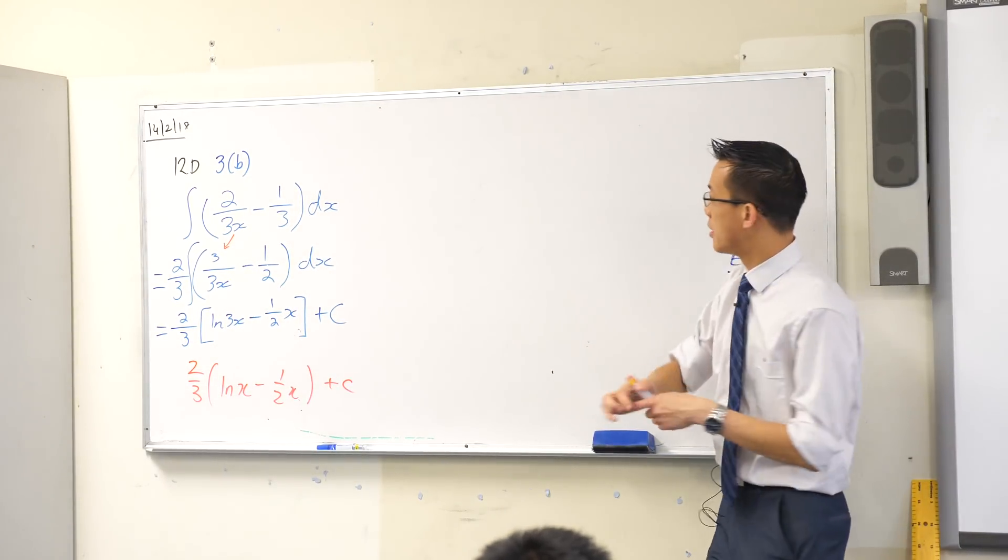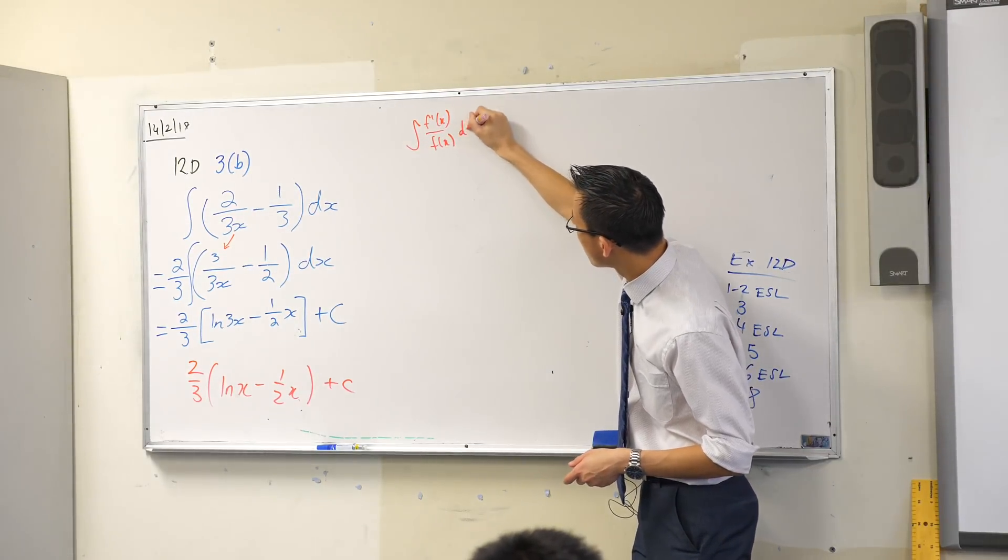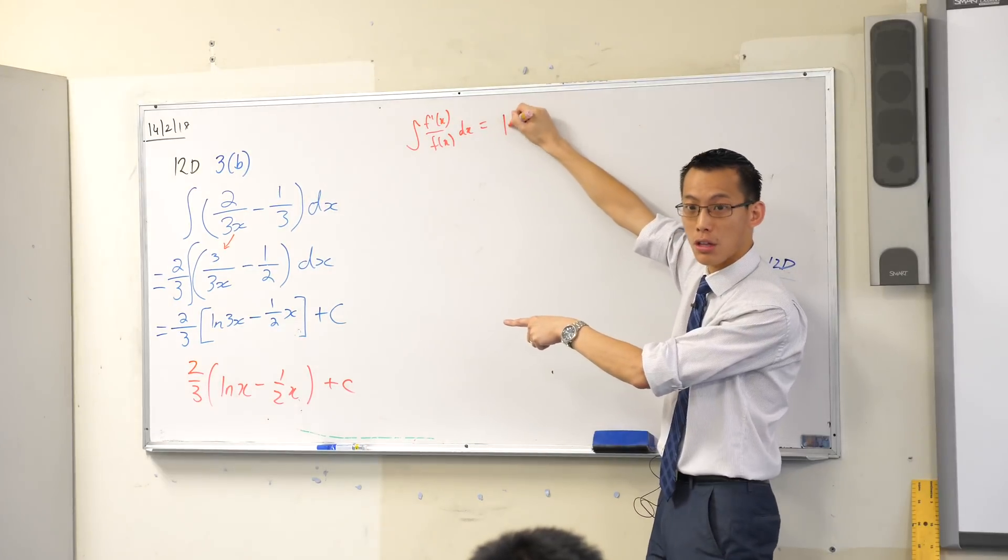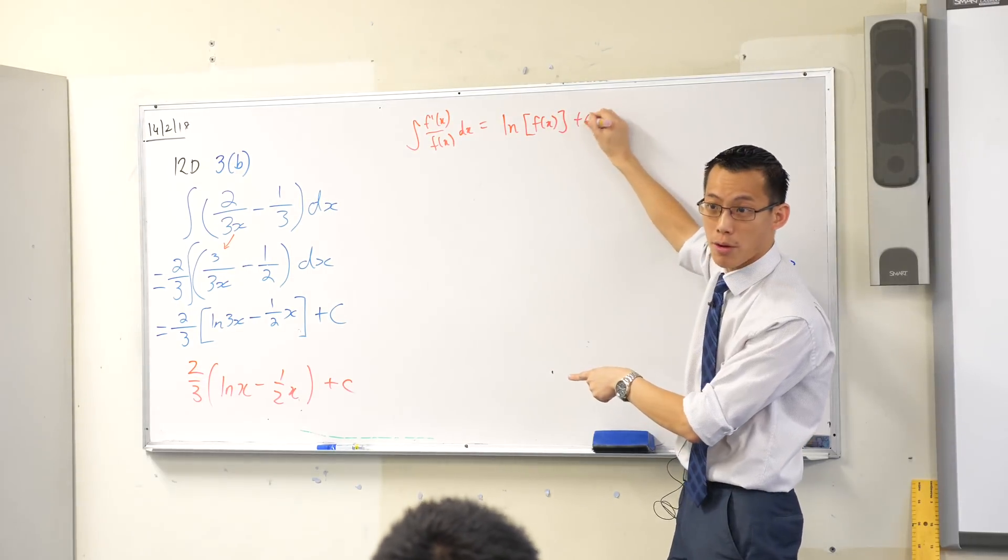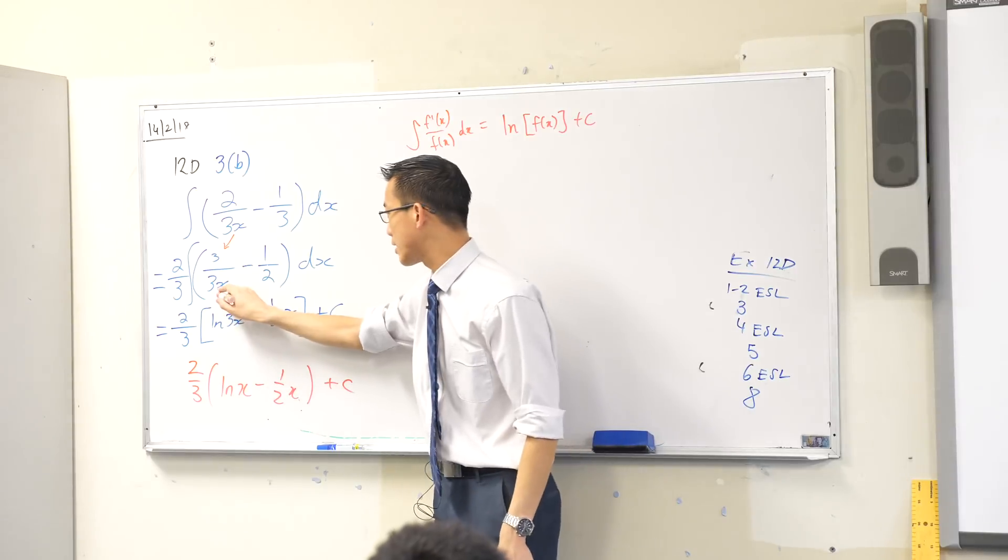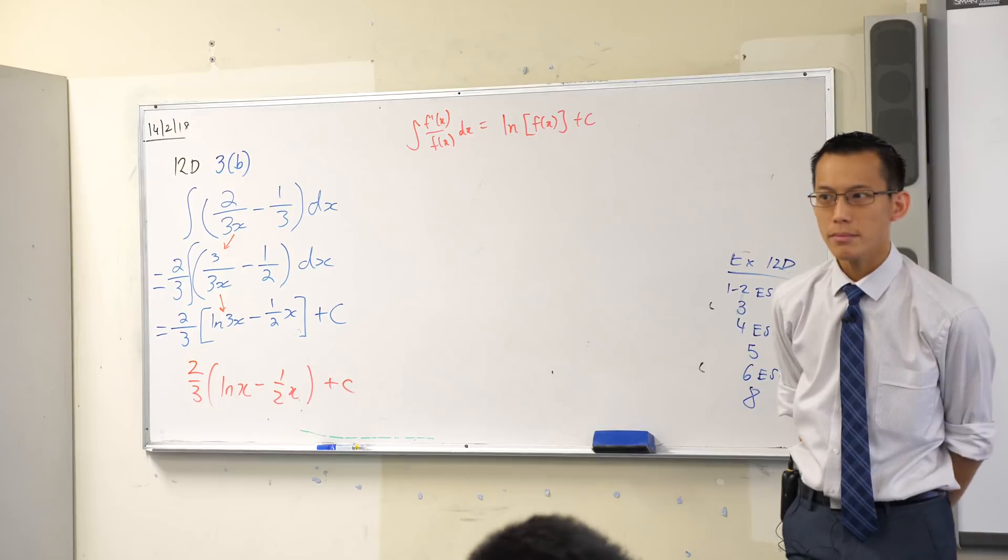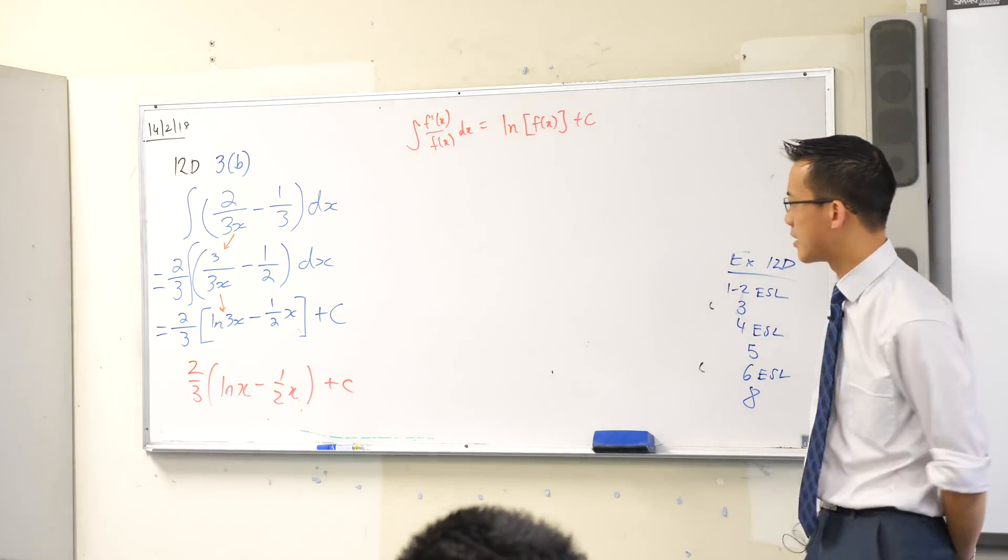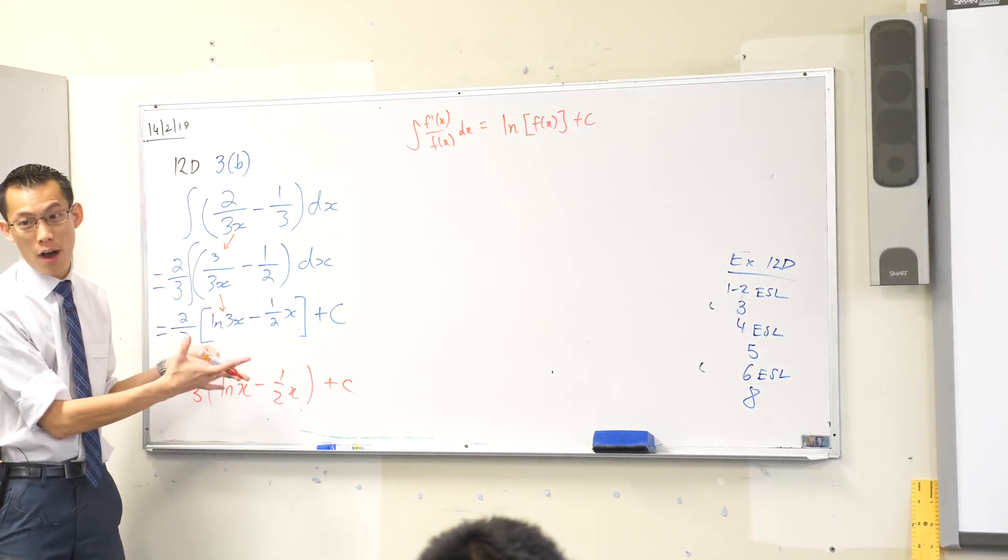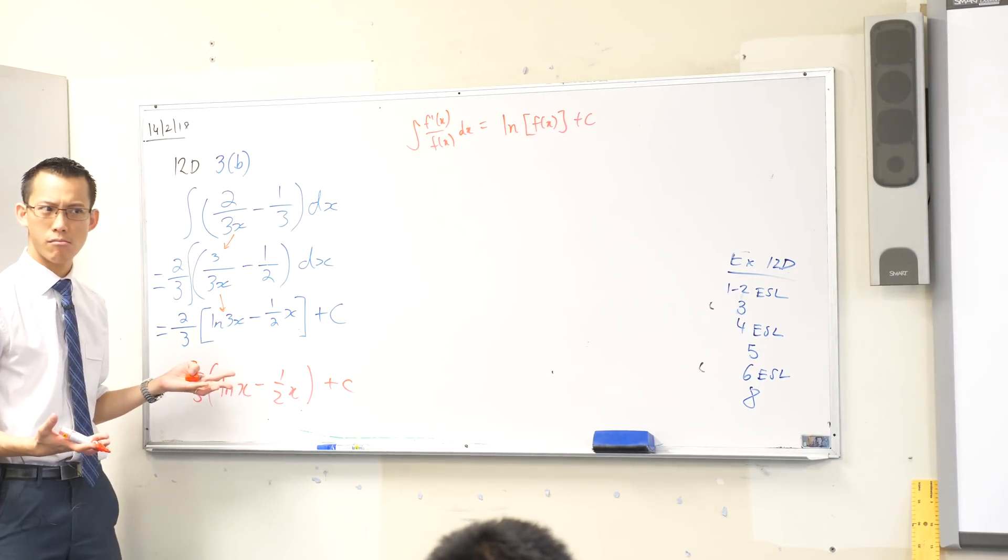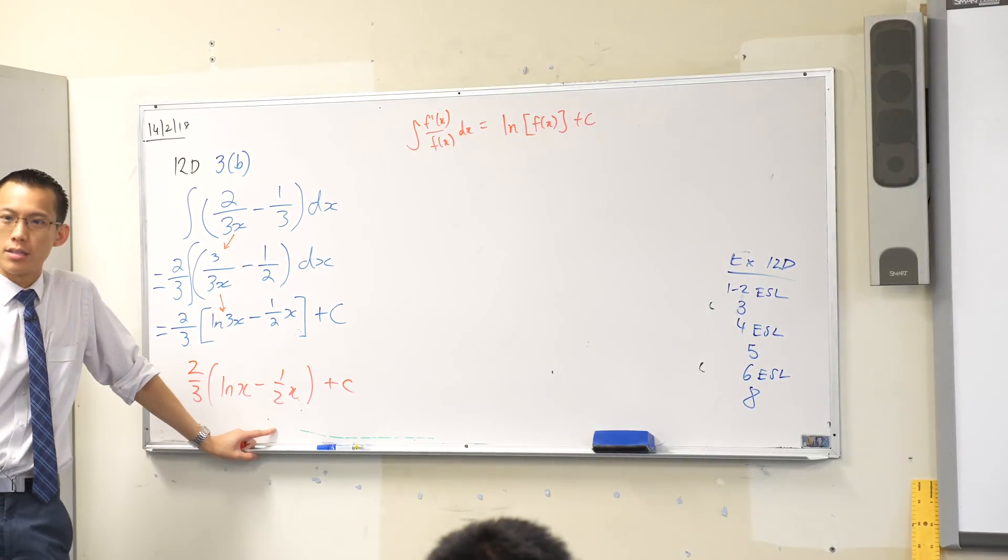He knows that the integral of f' on f is equal to, have a look at what he's done, log of what? Log of f, right? That's the way reverse chain rule works for logs. So he's correctly done that. That looks good. What about the half? Has he integrated that successfully? Looks okay, right? And he dutifully puts on the plus c because this is an indefinite integral. So everything so far, especially the way that I've said it, sounds fine, right? No holes in the logic, no holes in the arithmetic.